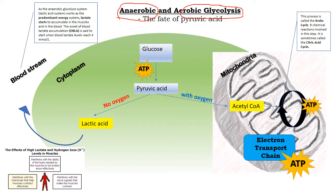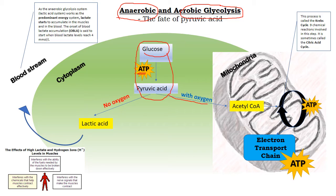Remembering here that the breakdown of glucose and converting that into pyruvic acid creates ATP. Now if there's enough oxygen present, that pyruvic acid is converted into acetyl coenzyme A, and that happens within the mitochondria.